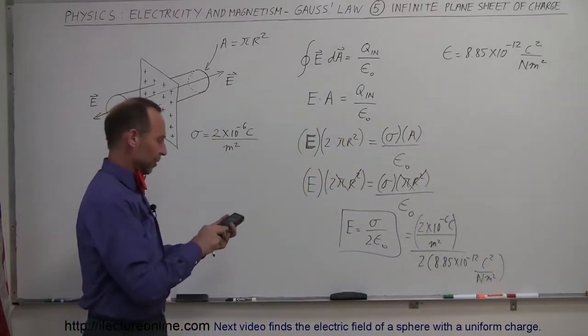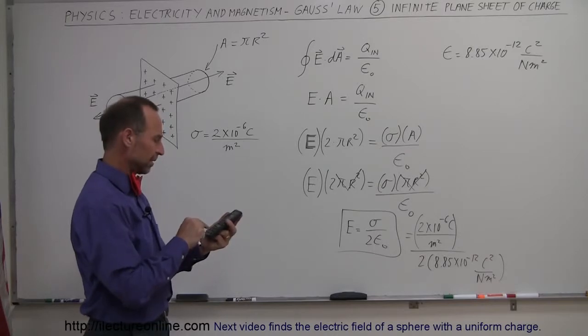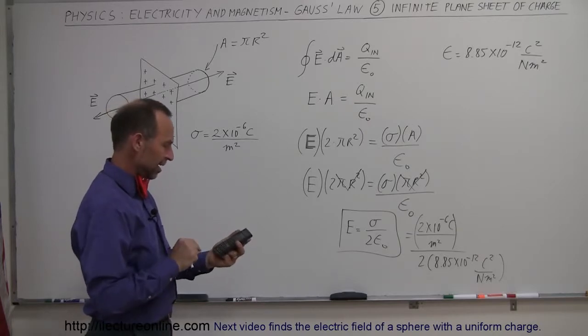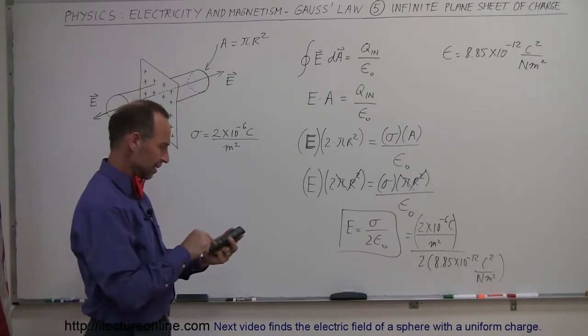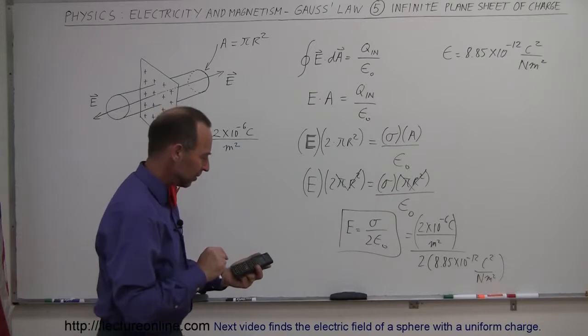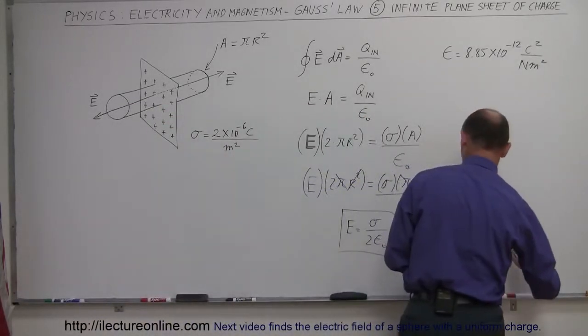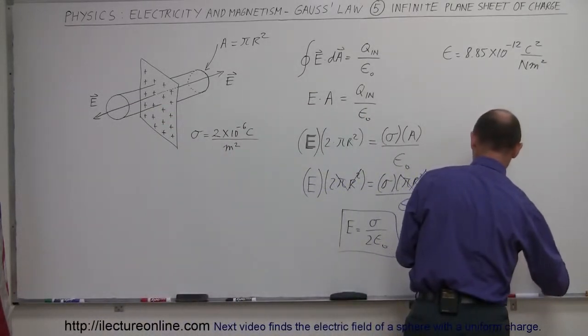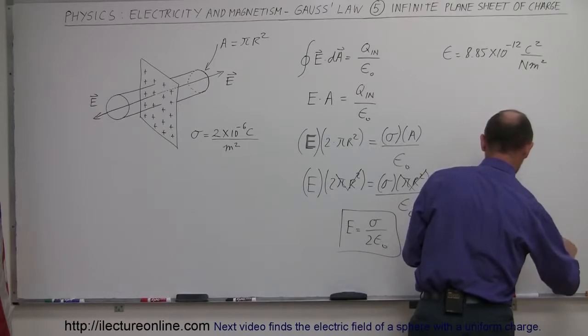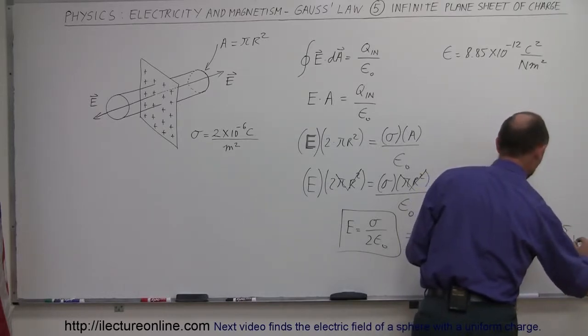And with a calculator, we can figure out what that is equal to. So 2e to the 6th minus divided by 2 divided by 8.85e to the 12th minus. And we end up with, so that would be equal to 1.13 times 10 to the fifth.